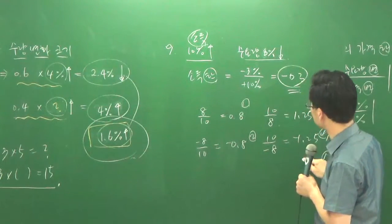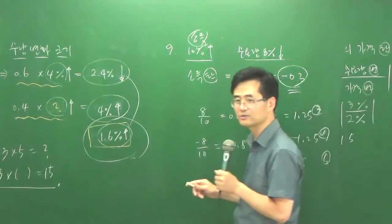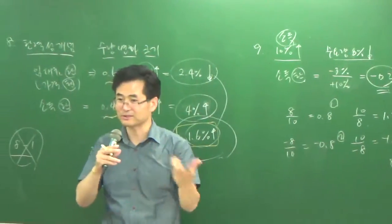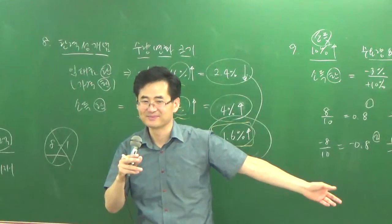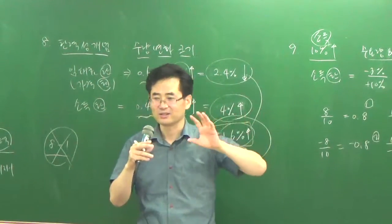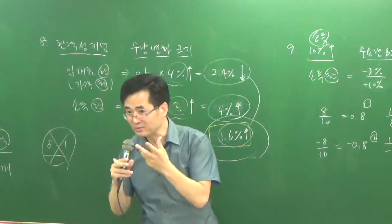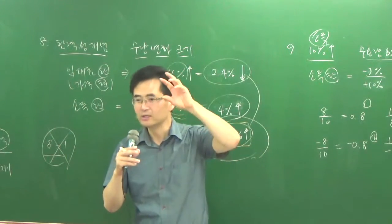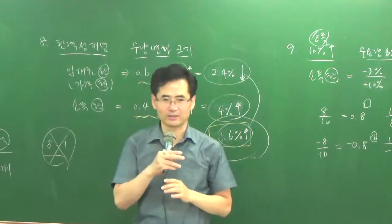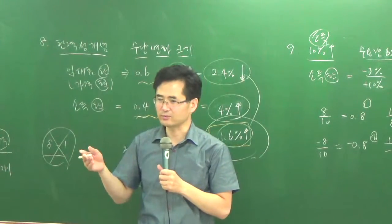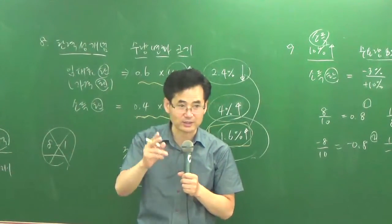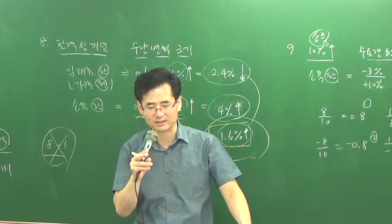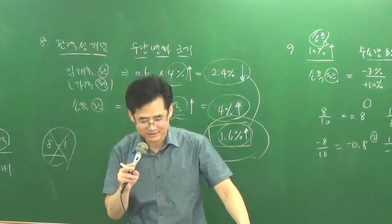그래서 1번 지문 이거 넣고 2번 지문 이거 넣고 3번 지문 이거 넣고 4번 지문 이거 넣고 5번에는 뭐 넣을까요? 5번에는 그냥 8 이렇게. 잘못해서 분모 분자를 잘못했을 경우도 넣어야 될 거 아니에요. 탄력성은 기본적으로 수량 변화의 크기를 나타내기 때문에 수량이 분자로 가야 돼요. 어떤 거든지 X재 가격 변화율 분의 Y재 수요량 변화율, 탄력성 개념 자체가 수량 변화를 나타내기 때문에 수량이 분자로 가야 됩니다.